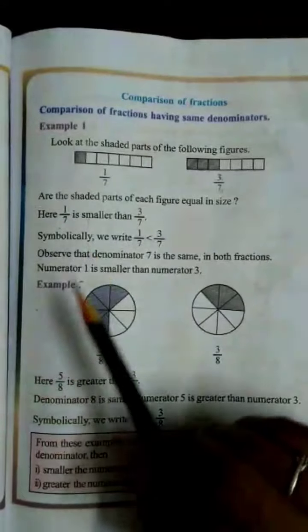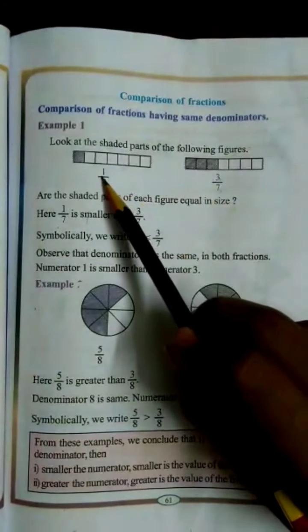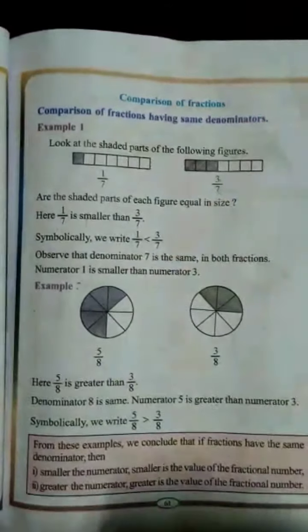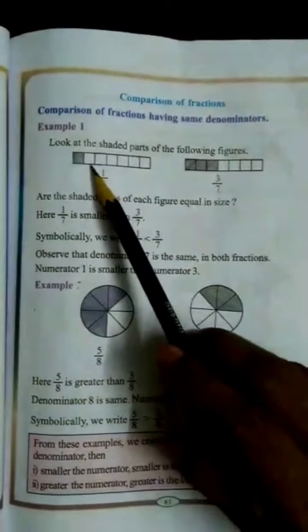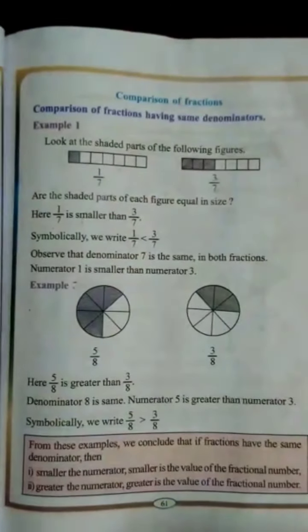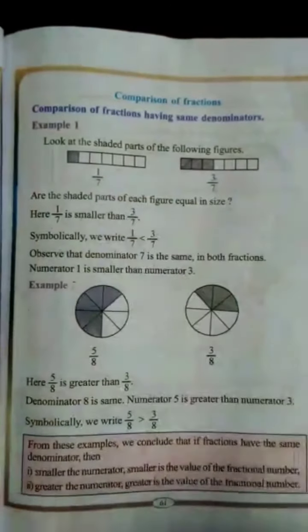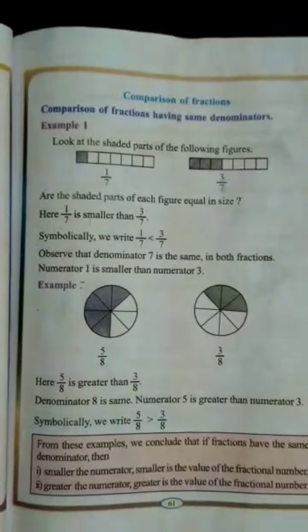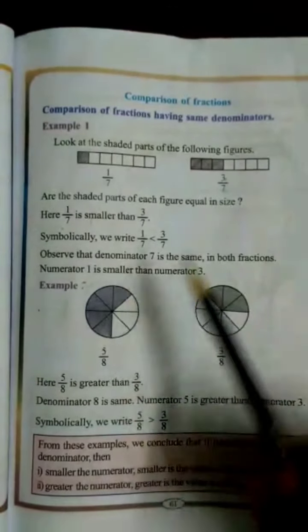Let us take the first example. Here we can see the fraction numbers 1 by 7 and 3 by 7. The denominator of both fractions is the same, but the numerator is different. So we have to concentrate on the numerator. The greater the numerator, the greater the value of the fractional number.